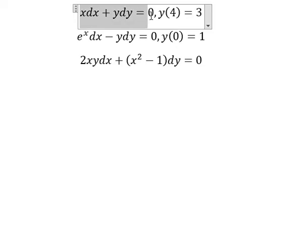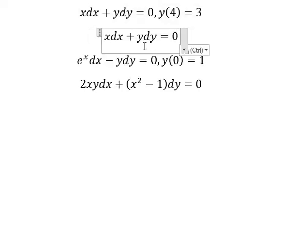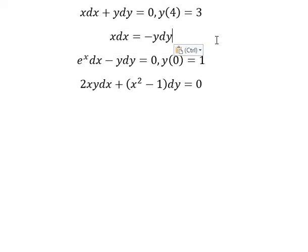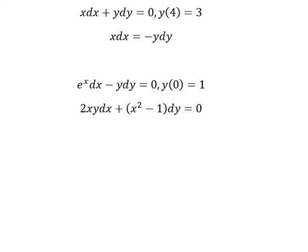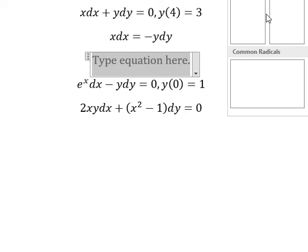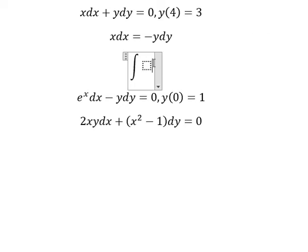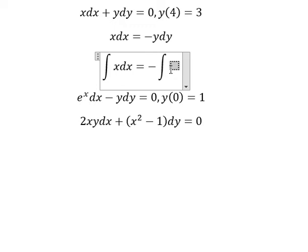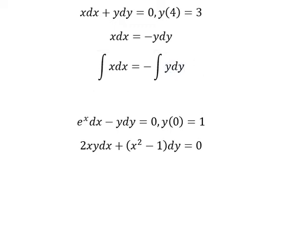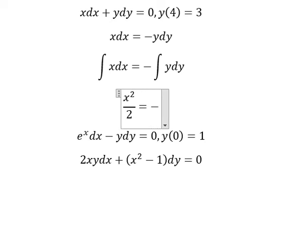For question one, we move this term to the right and we have negative y dy. Next we put the integration for both sides. The integration of x gives x squared over 2, and the integration of y gives y squared over 2.